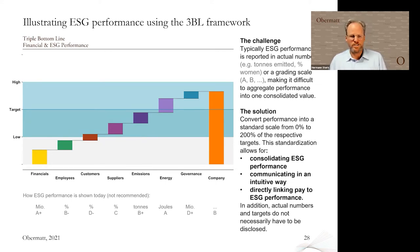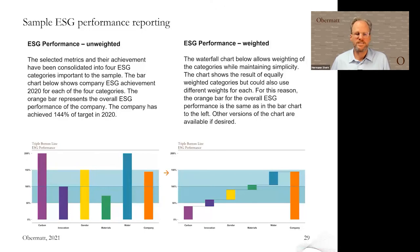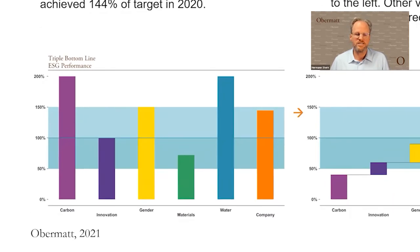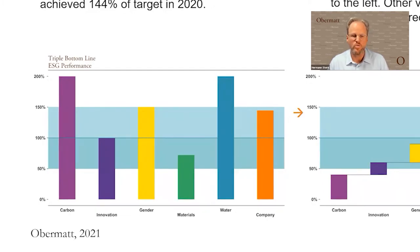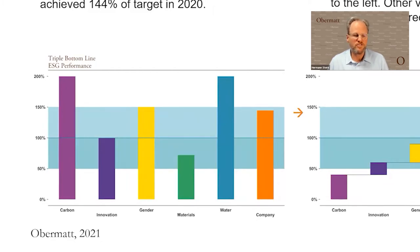How do we get to this chart? It all starts with your unweighted ESG performance, which can be represented in a bar chart. What you see here is an actual client where we implemented an ESG performance method. This client has selected carbon, innovation, gender, materials and water as their important aspects in their ESG strategy.